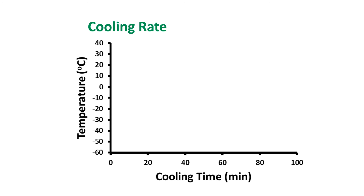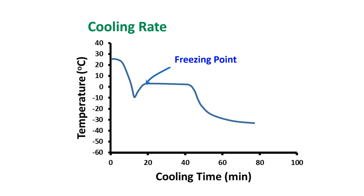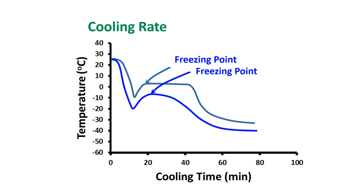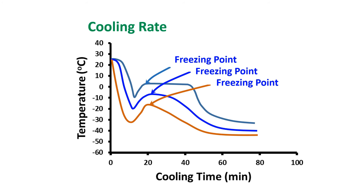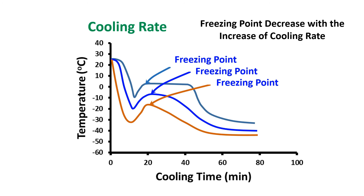We can understand this from the following examples. With a slow cooling rate, we observe the freezing point as marked. In the case of a moderate cooling rate, the freezing point is lower than that measured from slow cooling. In the case of fast cooling, the freezing point would also be lower than that measured from slow cooling. In another video I will explain how to optimize the cooling rate for measuring the freezing point.